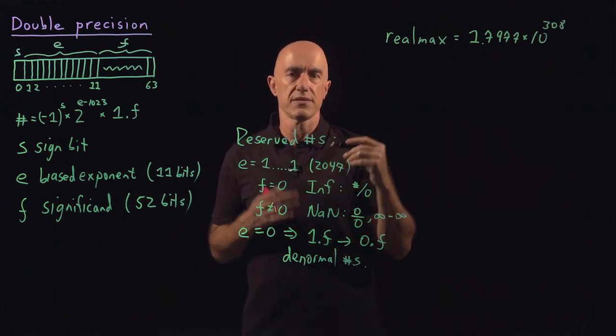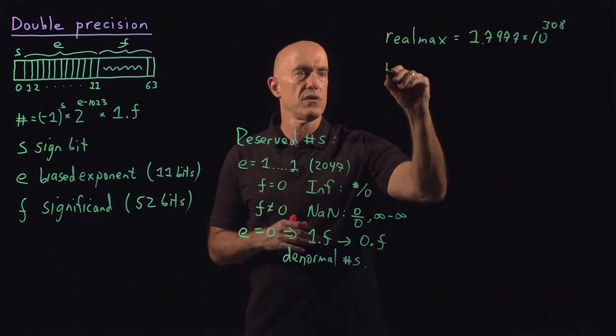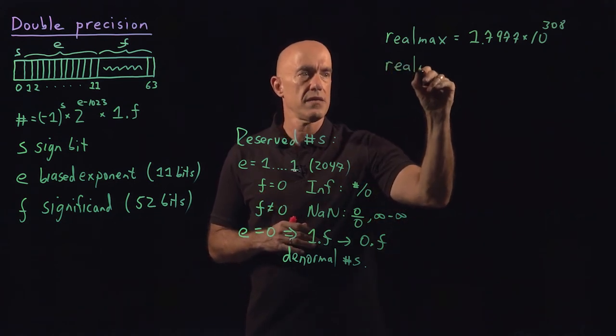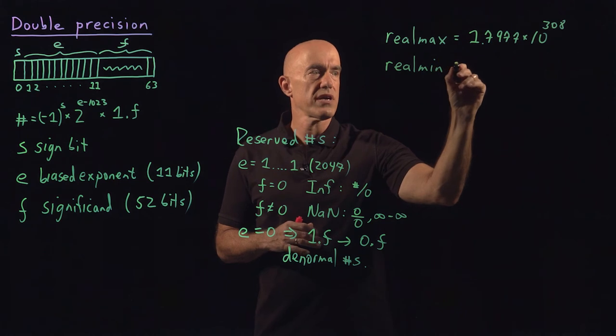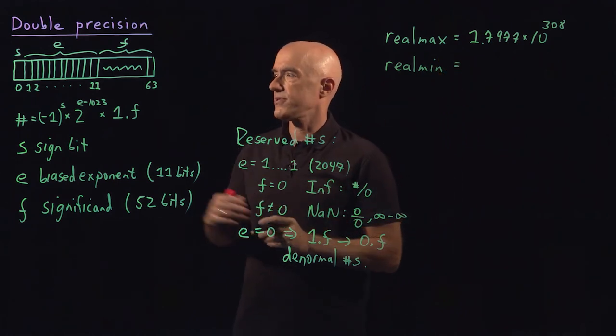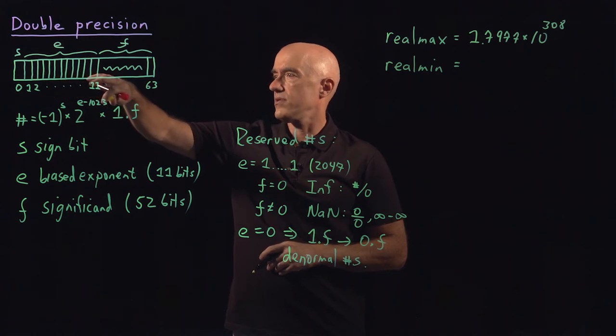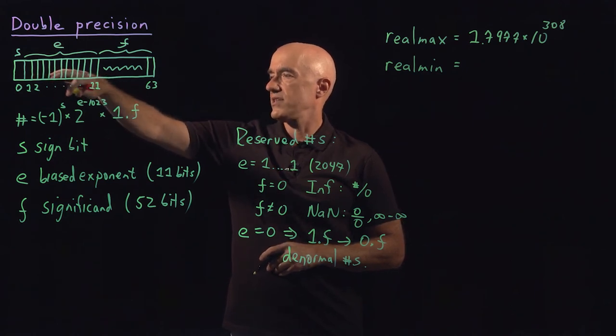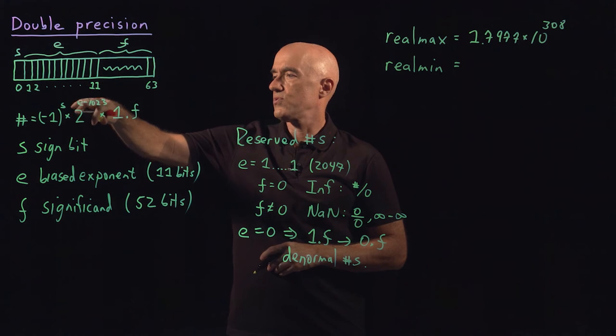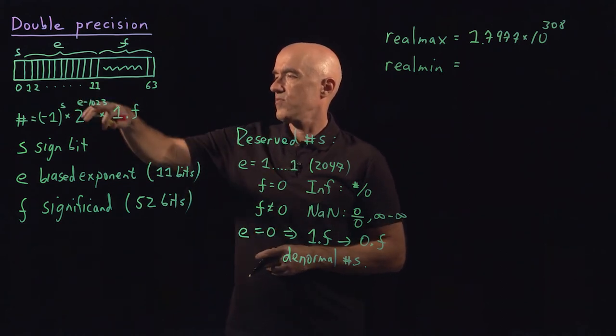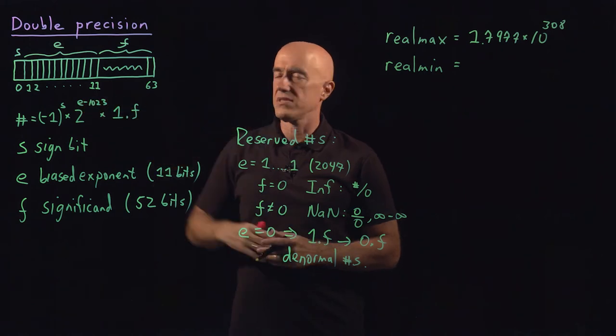The other extreme is the number closest to zero. That would be real min. Here we're talking about normal numbers. So E is not allowed to be all zeros. So E then is just a 1. So it's 2 to the 1 minus 1,023,